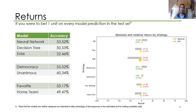Another metric you might want to look at is the returns, since the odds are already available in the feature set. On the left-hand side you can see the accuracy, and on the right-hand side the return you would have gained based on one-unit bets on each and every prediction of the model. Note that the neural net does the best in returns, even though it performs worse in accuracy than democracy and unanimous. This is because if you pick the favorite, the odds you're getting will be significantly worse than when picking the underdog. In other words, the neural net tends to correctly predict an underdog, whereas the unanimous or democracy approach will most likely pick the favorite to win.